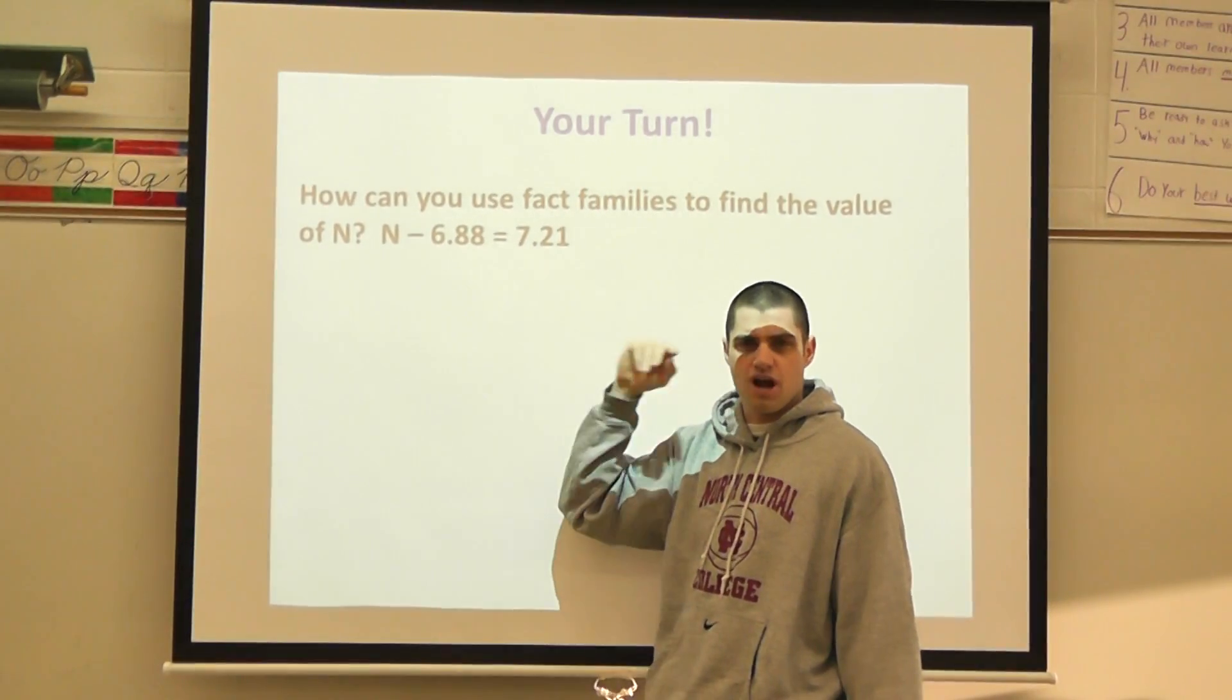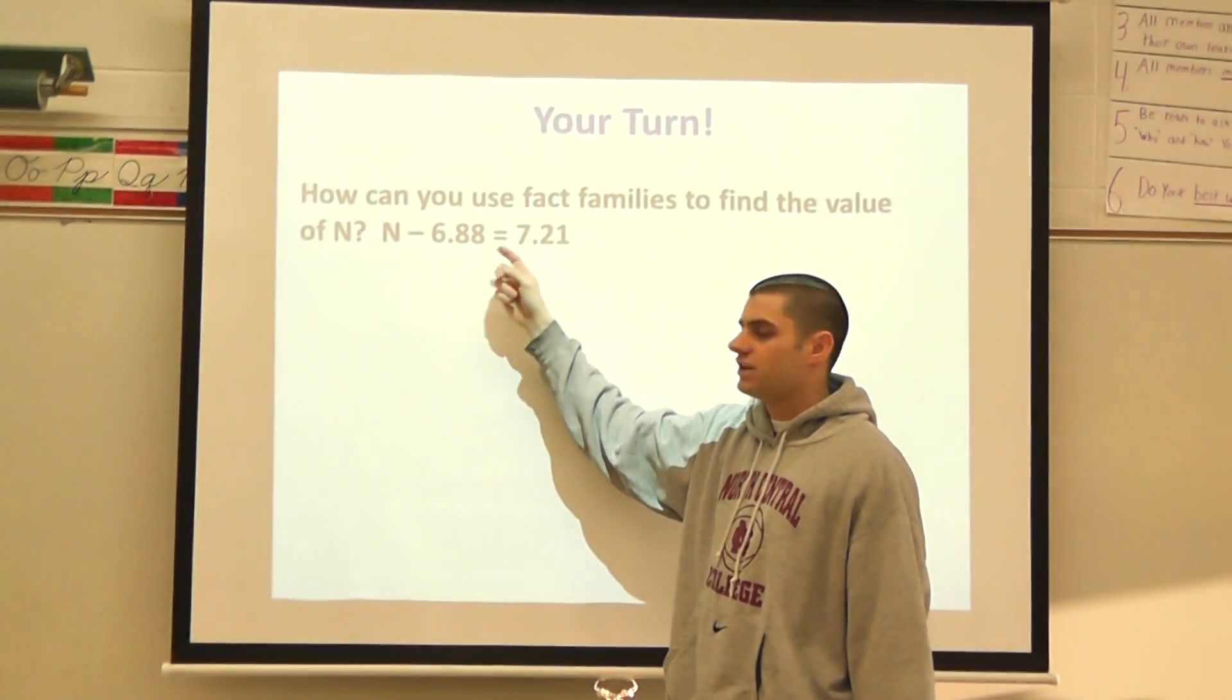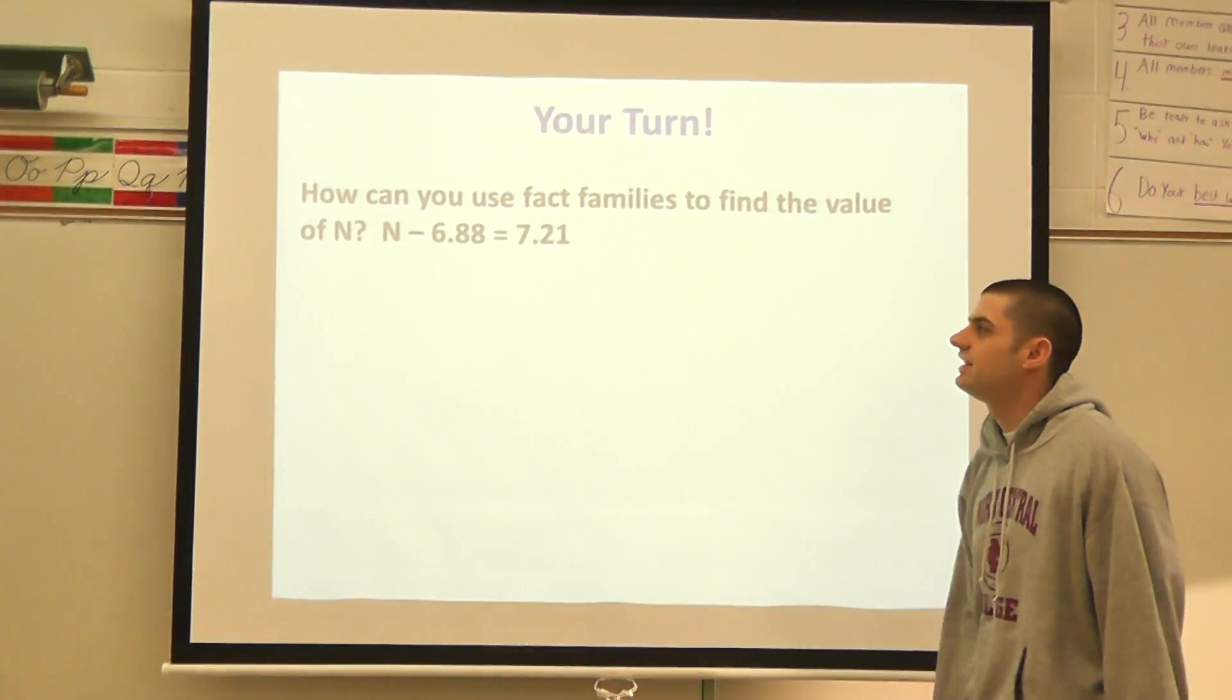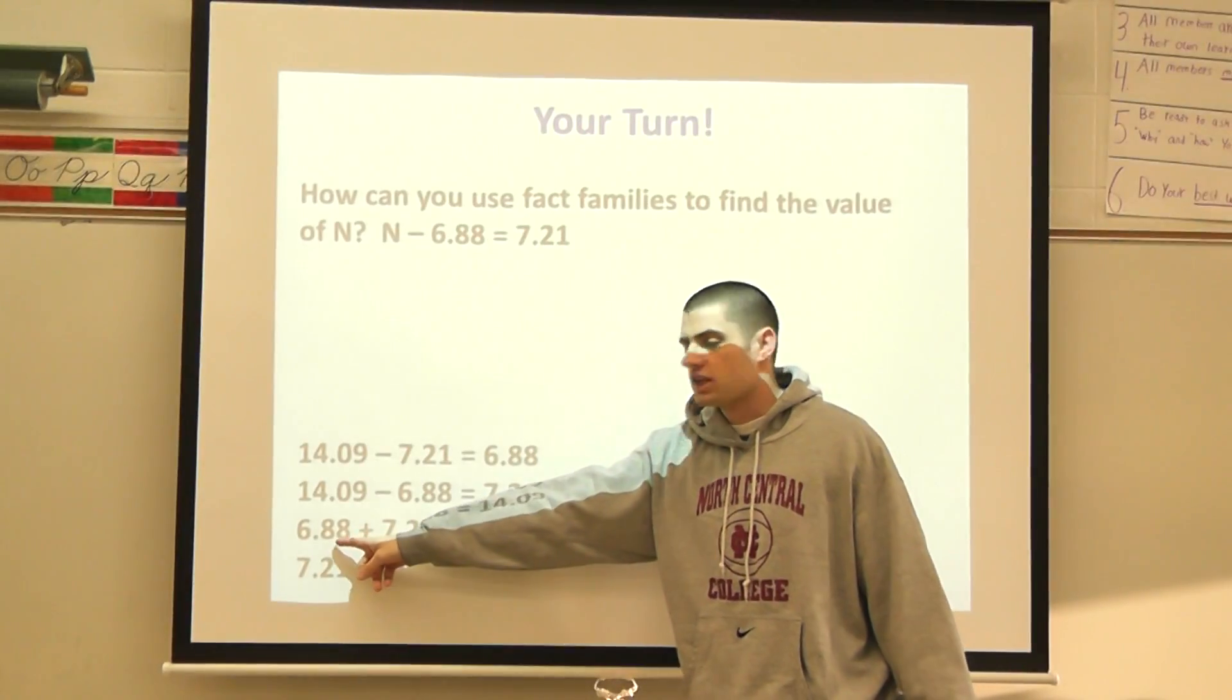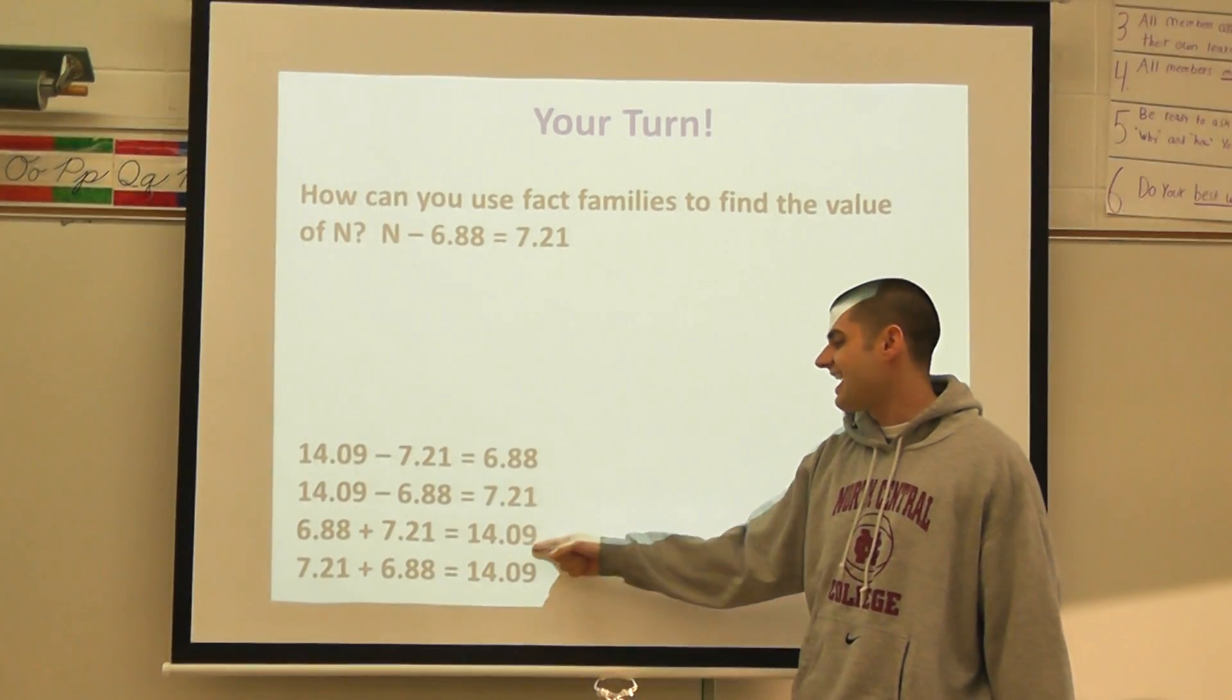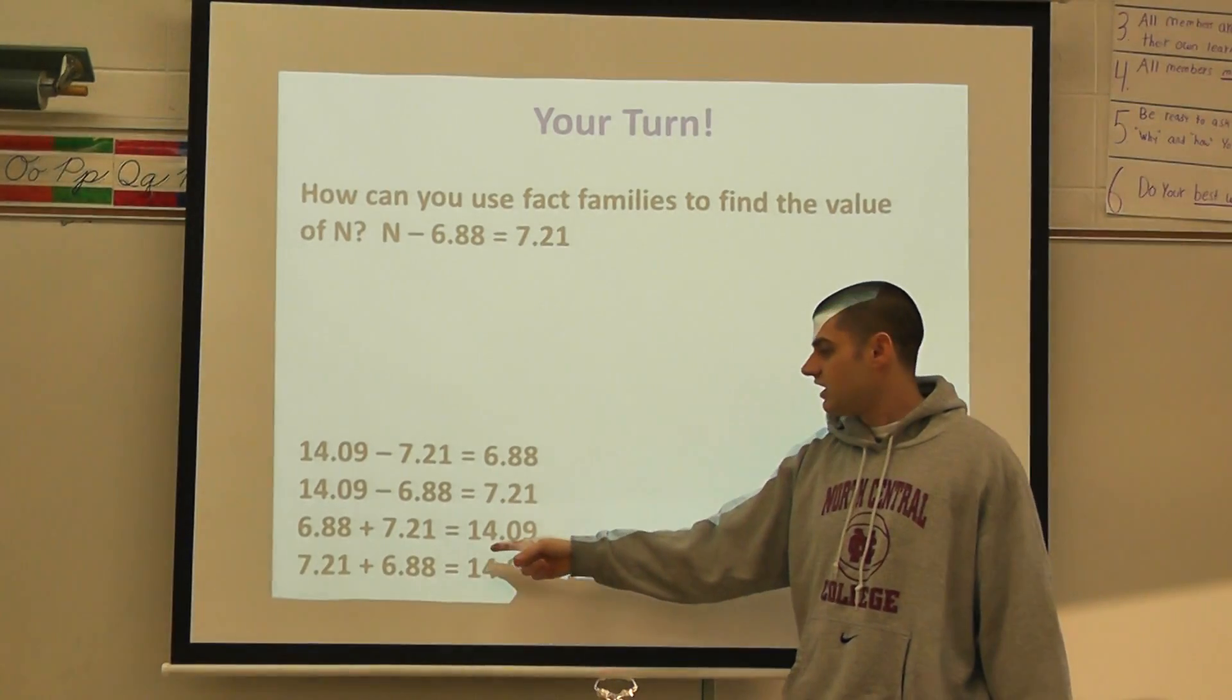But what else do I know? Think of like the inverse or the opposite operation. Oh yeah, I could turn this into an addition problem then, right? I can do this number plus this number, because in an addition problem the biggest number comes at the end. So I would be able to flip N over here and I'd be able to add these two numbers together. So let's try it. If I did 6.88 plus 7.21, this would equal 14 and 9 hundredths.